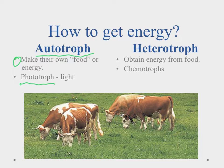When we talk about autotrophs, we're mainly talking about things like grass and plants. Plants are phototrophs — they take the energy in sunlight and convert it into chemical energy that the cells can then use later on for the processes of living.